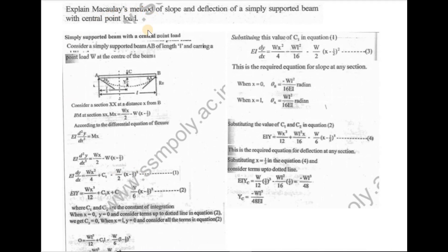Next, we are going to do Macaulay's method for a simply supported beam to find slope and deflection. Macaulay's method is based on the double integration method, where we define sections and write the differential equation, then apply Macaulay's method to evaluate the full expression.